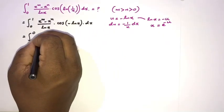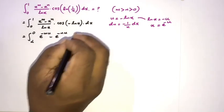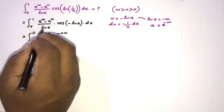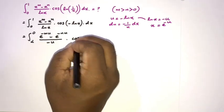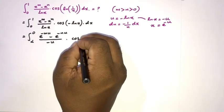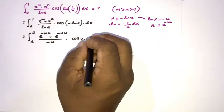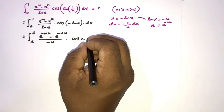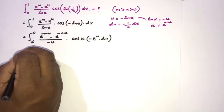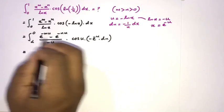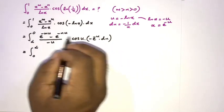Substituting everything in, x to the m becomes e to the minus m times u, x to the n becomes e to the minus n times u, natural log of x becomes minus u, cosine argument becomes u, and dx becomes minus e to the minus u du. The minus signs cancel when we swap the boundaries, giving an integral from 0 to infinity.